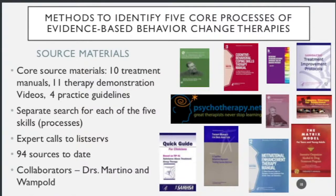There were core sources that cut across all five core processes, all specific to addiction: 10 treatment manuals, 11 therapy demonstration videos, and 4 government-issued practice guidelines. There was also a separate search process for each of the five core processes, which was transdiagnostic and multidisciplinary — reaching into business, philosophy, social psychology, and medicine, depending on which process I was working on.